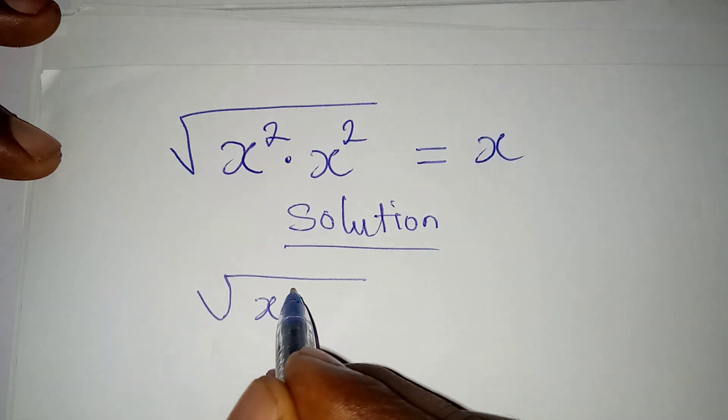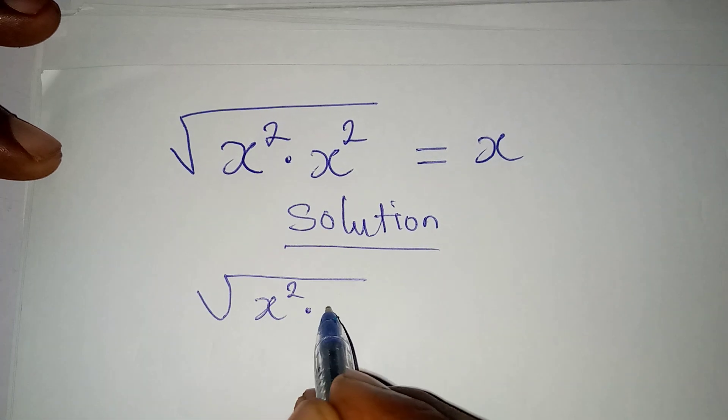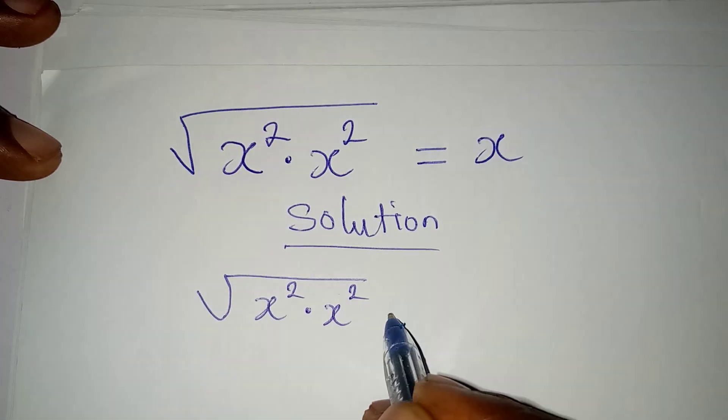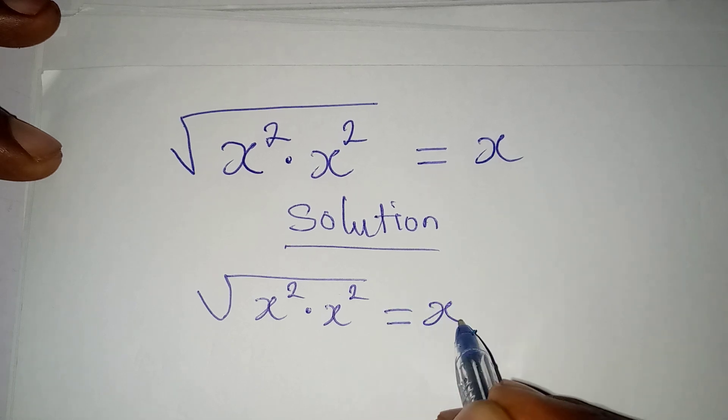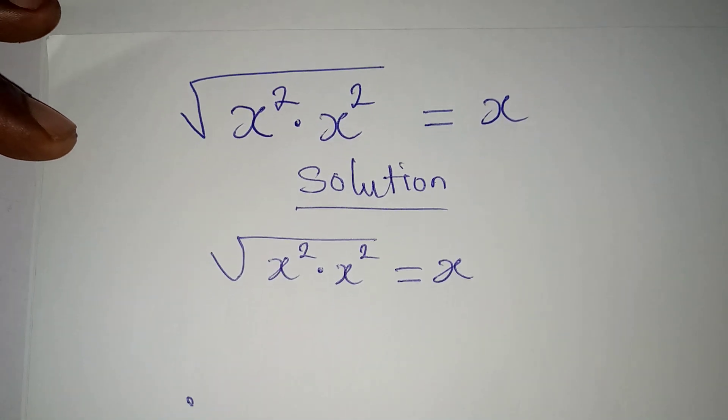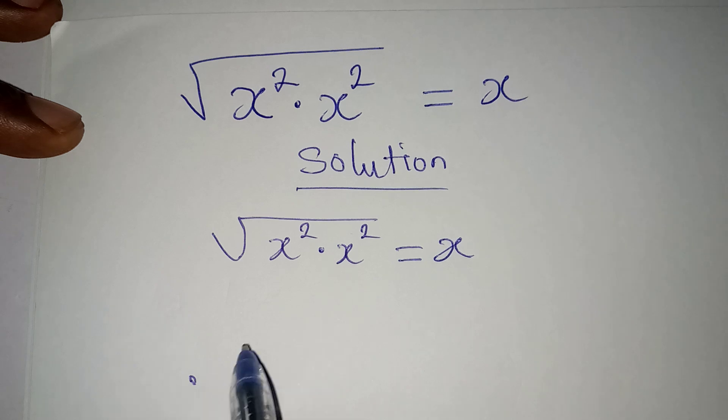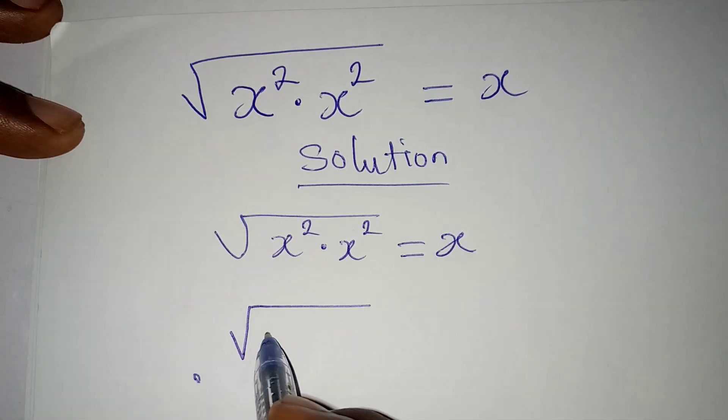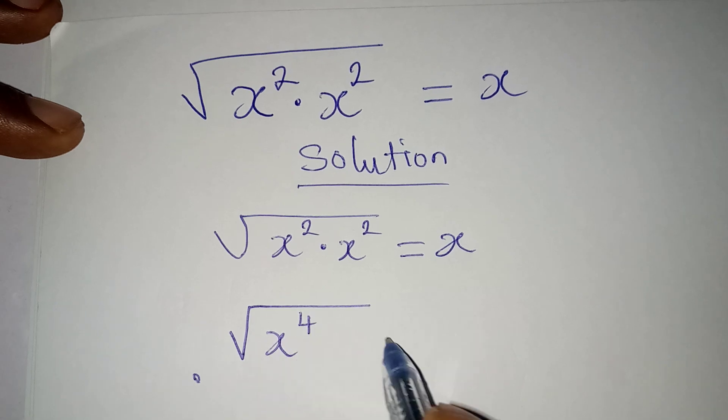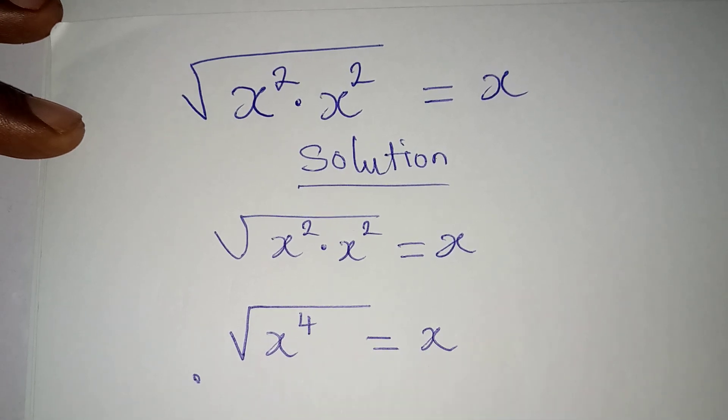We have square root of x squared multiplied by x squared equal to x. The first thing is to work on the left hand side, so we have square root of x to the power of 4, which is equal to x.